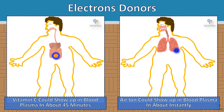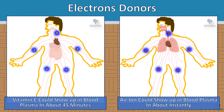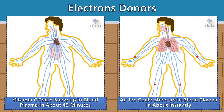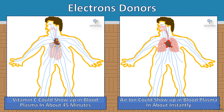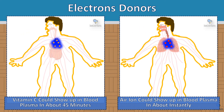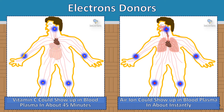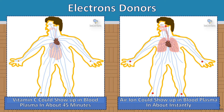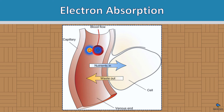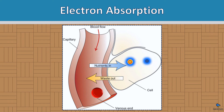Eating an orange or inhaling an air ion — it's the same electron. Vitamin C could show up in the blood plasma in about 45 minutes, whereas inhaling air ions could show up almost instantly. I'm not saying to stop eating oranges — I'm saying it's not that difficult to understand this concept. An air ion travels inside the red blood cell, along with vitamin C in the plasma, and they both get delivered to the same tissue. It's the same process.